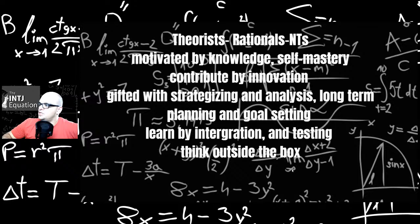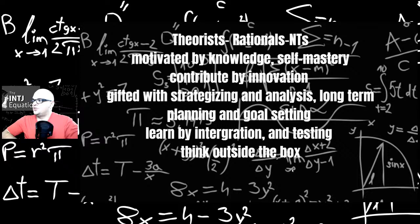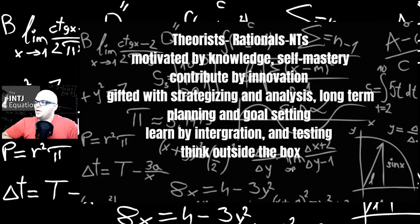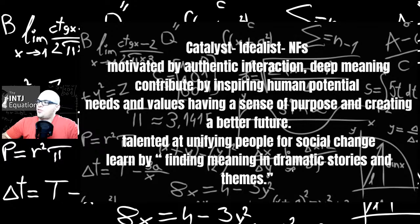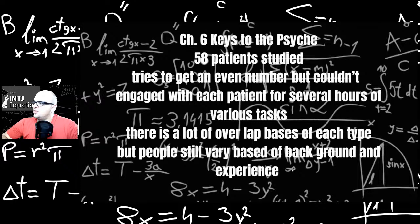Theorists, Rationals, NTs, so INTJs, ENTJs, ENTPs, INTPs, motivated by knowledge, self-mastery, contribute by innovation, gifted with strategizing and analysis, long-term planning and goal setting, learned by integration, testing and thinking outside the box. Next are the catalysts, idealists, NFs, so INFPs, ENFPs, INFJs, ENFJs, motivated by authentic interaction, deep meaning, contribute by inspiring human potential, needs and values having a sense of purpose and creating a better future, talented at unifying people for social change, learned by finding meaning in dynamic stories and themes.